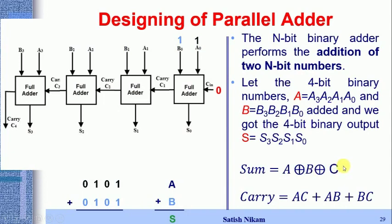From sum = 1 XOR 1 XOR 0, we get sum s0 = 0. For carry: AB = 1, AC = 0, BC = 0. ORing these three gives carry-out c1 = 1. So for the LSB bit, s0 = 0 and c1 = 1.